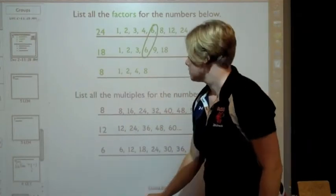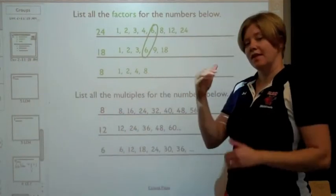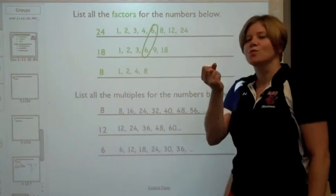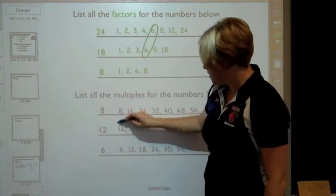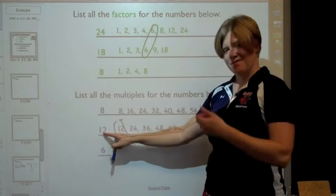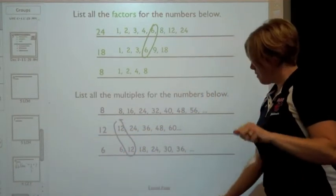So, moving on. 12 and 6. What's the least common factor for 12 and 6? Well, it's 12. So it can be the number itself. That can happen.